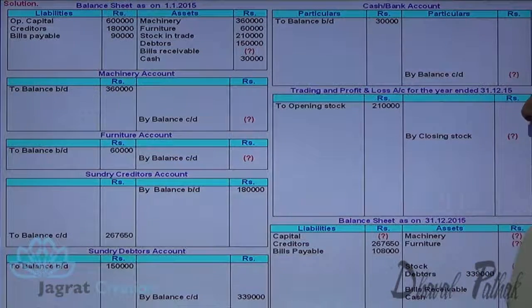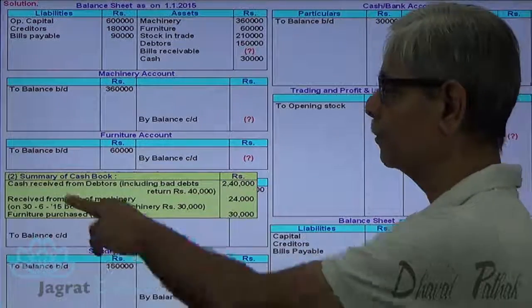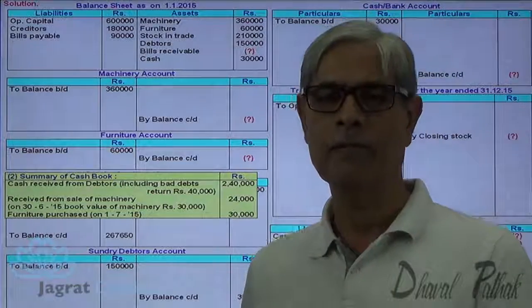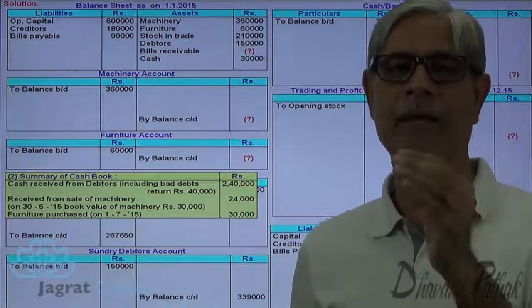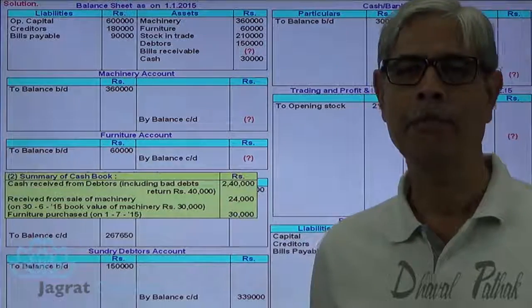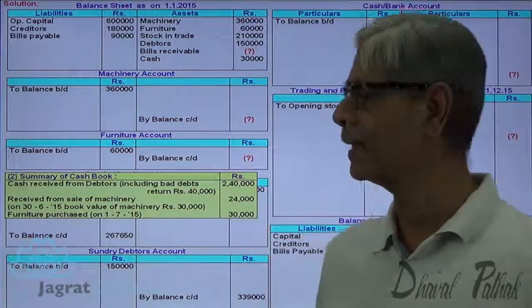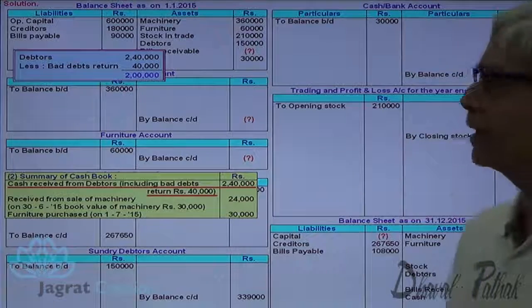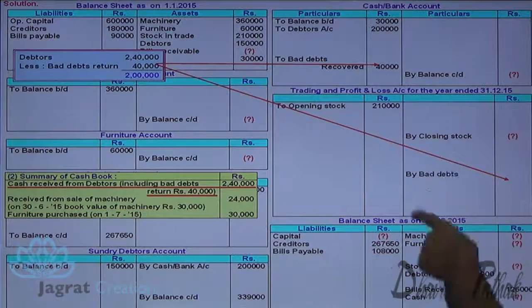Cash received from debtors is Rs. 2,00,000 and bad debt recovery is Rs. 40,000. Bad debt recovery is an income to be credited to profit and loss account. Journal entry: cash account debit to debtors account credit for Rs. 2,00,000, and cash account debit to bad debt recovered credited to profit and loss account for Rs. 40,000.